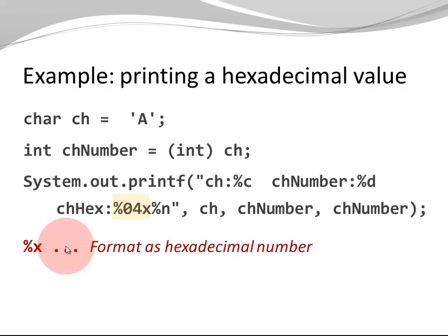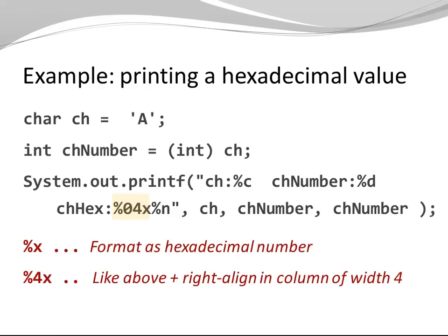But without the two leading zeros. However, we want to have 0041. This is the typical way Unicode number values are displayed. I can do that by specifying a width of 4, so the extra 4 says we have a column width 4, my number is right aligned.